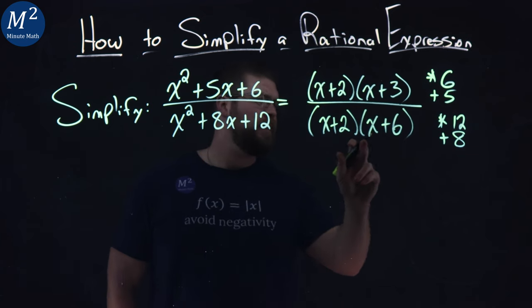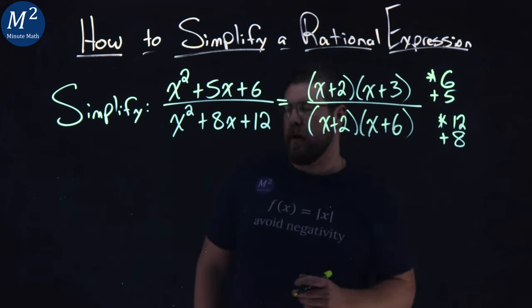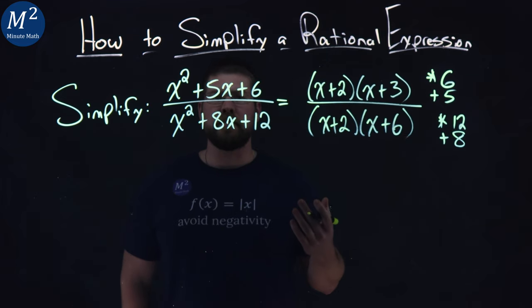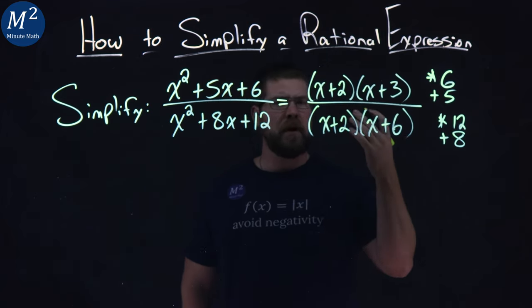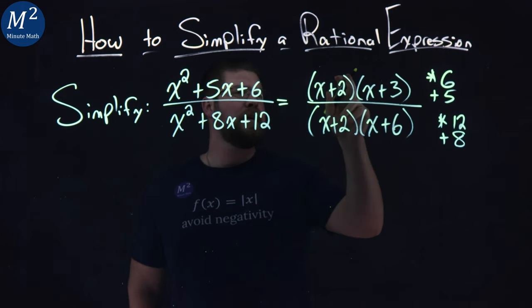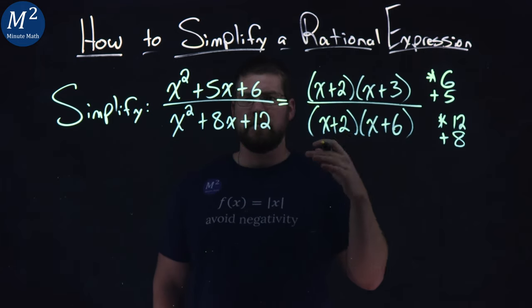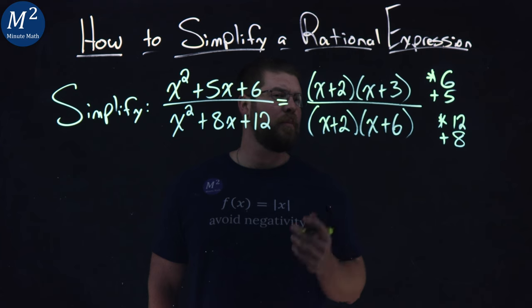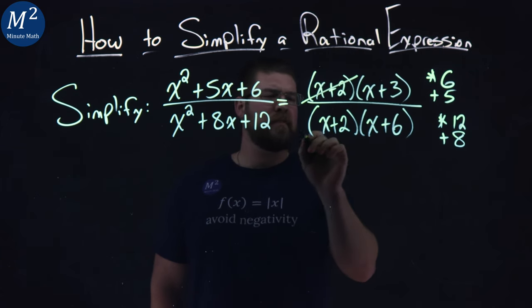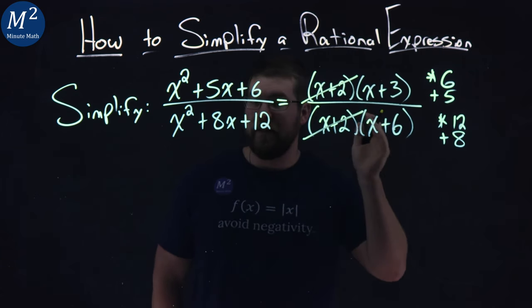Okay, 2 and 6 add to 8, multiply to 12. Where do we go from here? Well, we can cancel out, cross off items in the numerator and denominator that are the same if they're being multiplied. I see x plus 2 right here and x plus 2 right there.